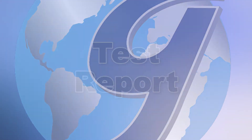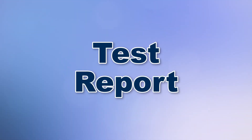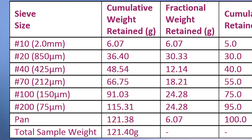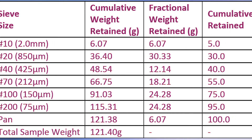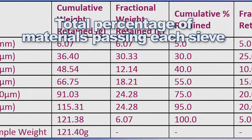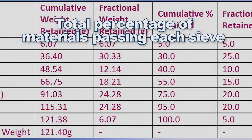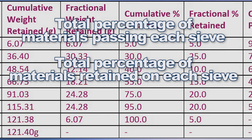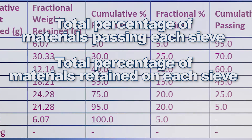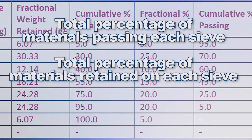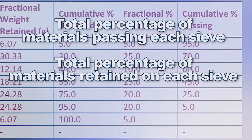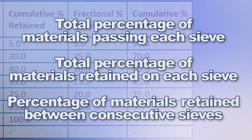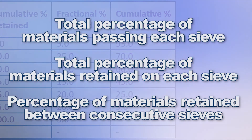Depending on the specifications for the materials being tested, the findings should include the following: total percentage of materials passing each sieve, or total percentage of materials retained on each sieve, or percentage of materials retained between consecutive sieves.